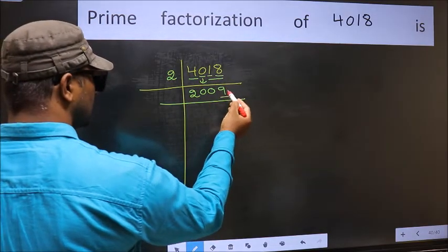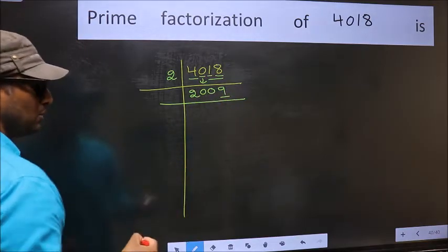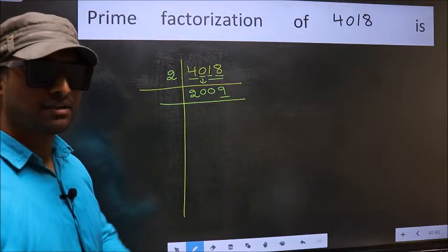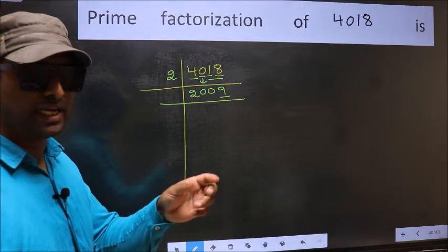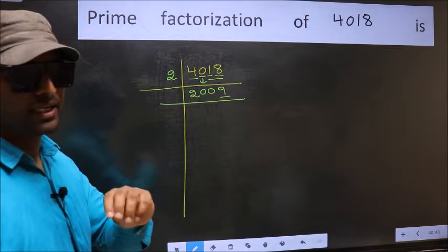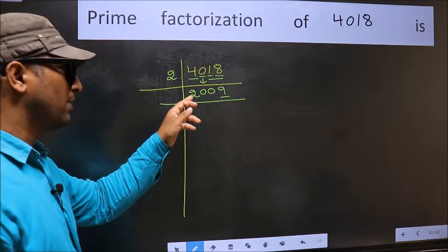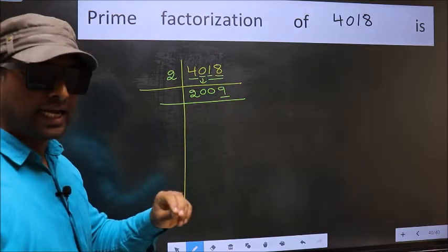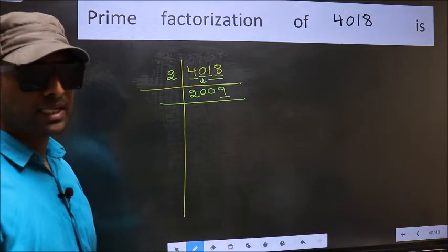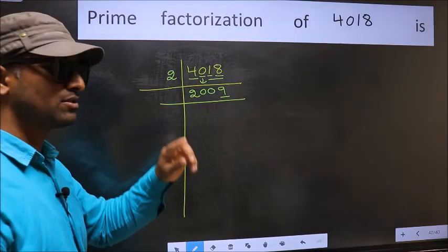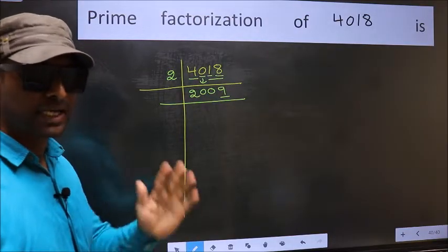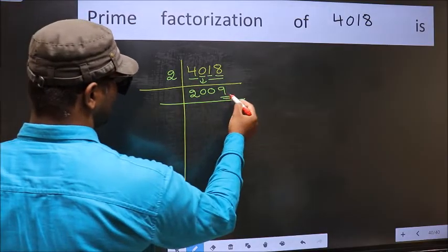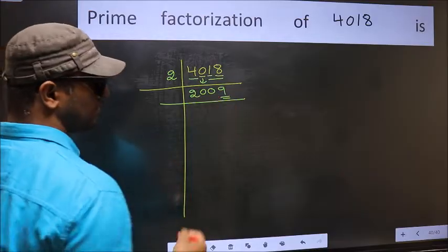Now, the last digit 9, not even, so not divisible by 2. Next, prime number 3. To check divisibility by 3, we should add the digits. What I mean is, 2 plus 0 plus 0 plus 9, we get 11. And 11 is not divisible by 3, so this number also not divisible by 3. Next, prime number 5. The last digit is neither 0 nor 5, so this is not divisible by 5.